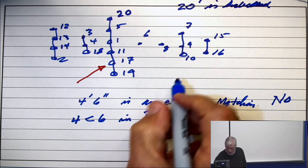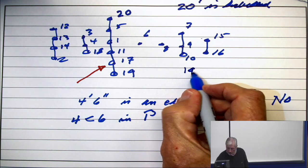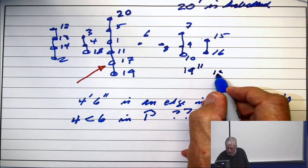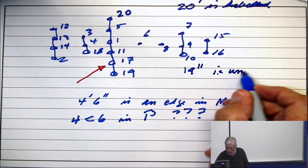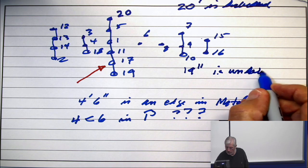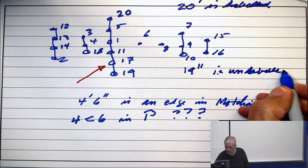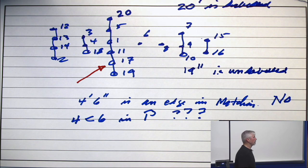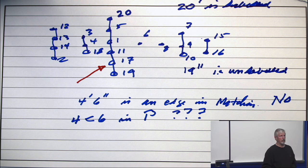Explain to me why 19 double prime is unlabeled. You can't see it, but just explain to me why it is.